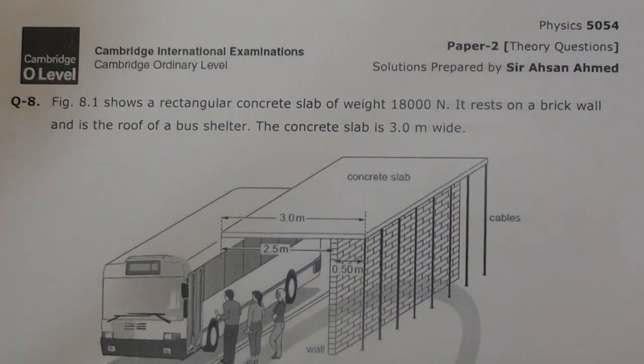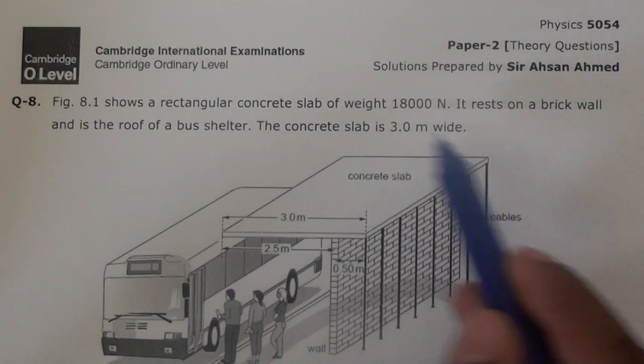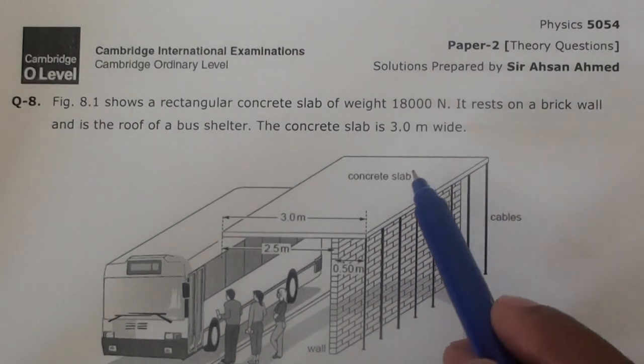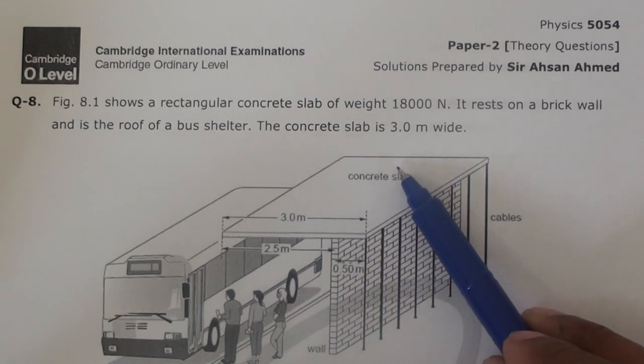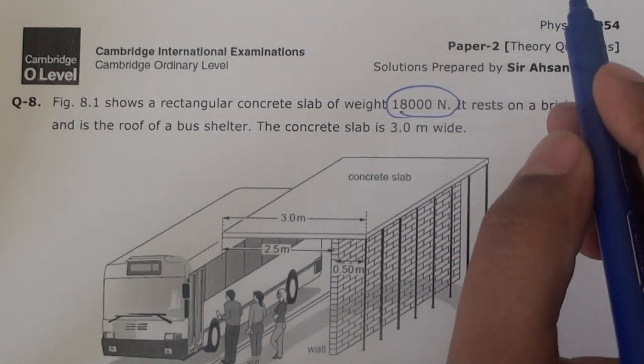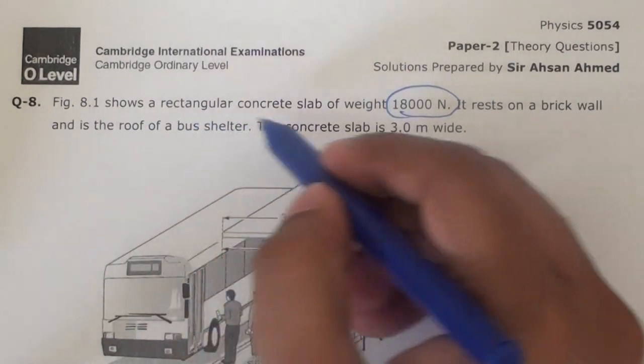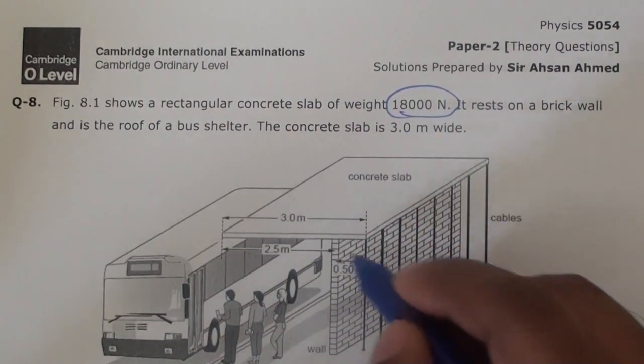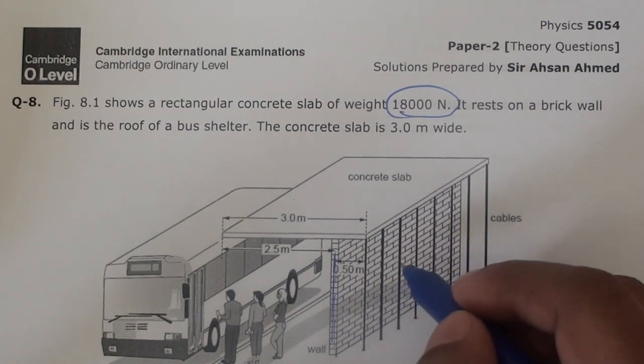Alright, very interesting question from past papers. This is by the way a bus stand on a concrete slab. The slab is very heavy, weighing 18,000 newtons. It rests on a brick wall and is the roof of a bus shelter. This is a brick wall you can clearly see, and it rests on it.